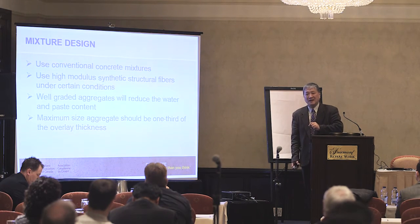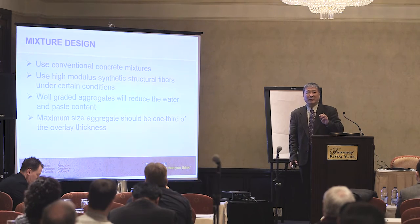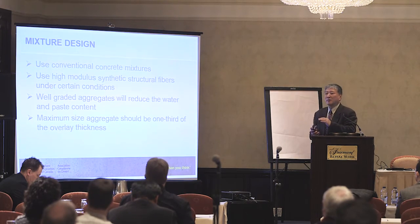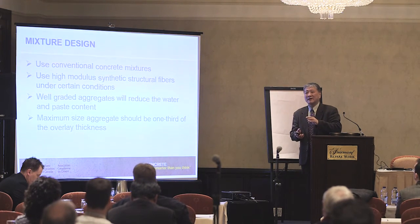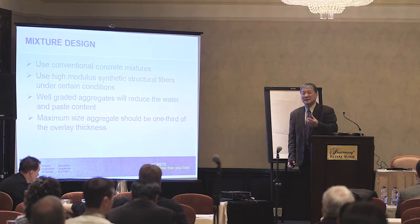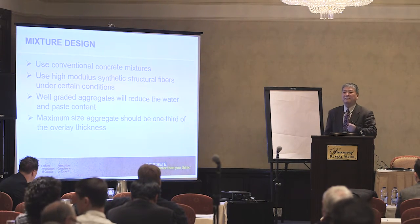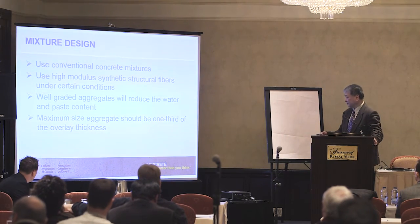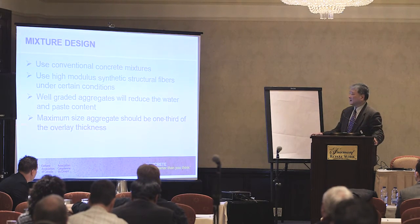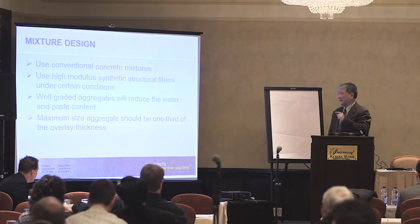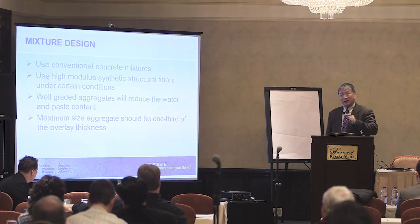When bonding to existing concrete, choose coarse aggregate very similar to what was used in the old concrete to minimize differential expansion and contraction, which in turn minimizes the potential for cracking. Also, regardless of the type of overlay — bonded or unbonded — your maximum coarse aggregate size should be no more than one-third of the overall overlay thickness.